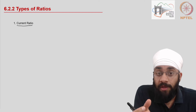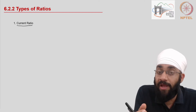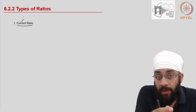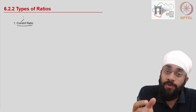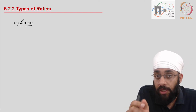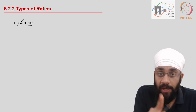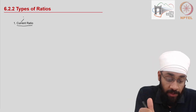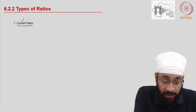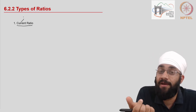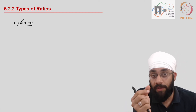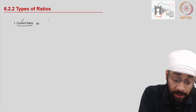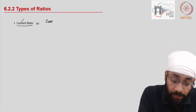The first indicator under this category is the current ratio. The word 'current' is not new to you — it appears in current assets and current liabilities. It refers to less than one year. Current assets are assets expected to be converted to cash in less than one year, and current liabilities are liabilities to be paid within the next one year. The current ratio makes use of both.